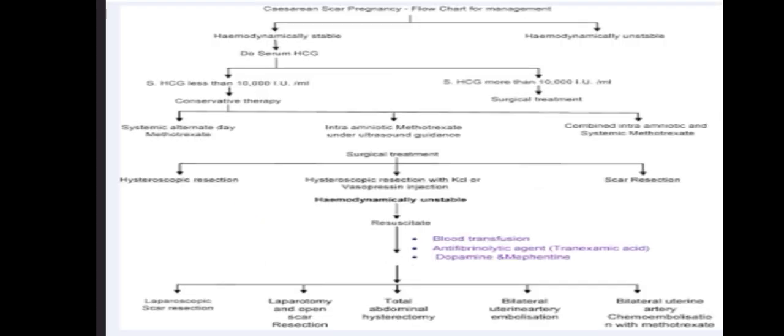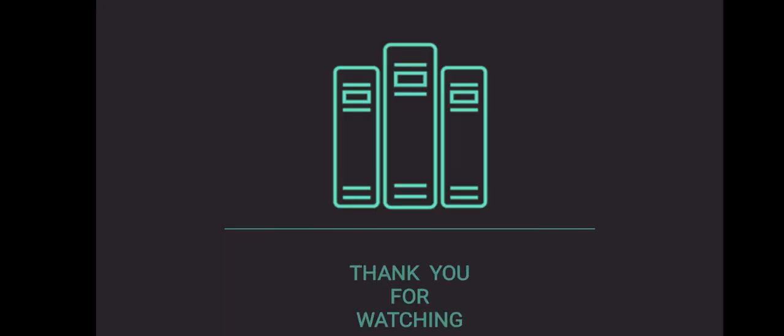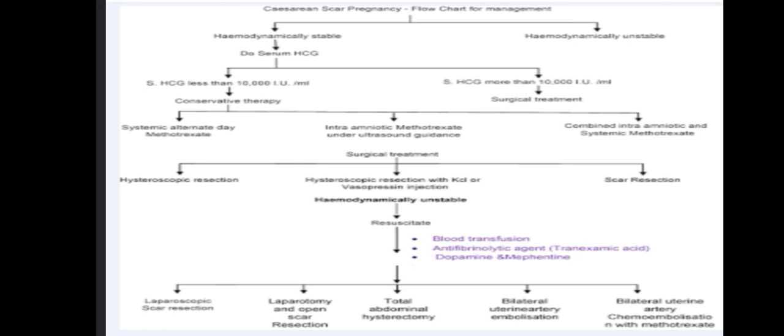Conservative management is associated with increased morbidity because if the pregnancy is expanding it can lead to risk of bleeding and rupture of the uterus. So expectant management is not preferred; you can go for methotrexate by intramuscular route to prevent further growth. If the patient is hemodynamically unstable and has rising beta HCG levels, then surgical management is considered.